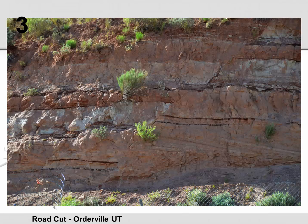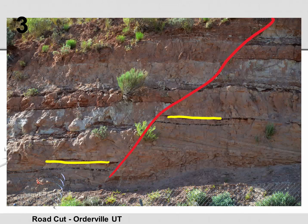Number three is the road cut in Orderville, Utah. Let's identify the fault plane, leaning from left to right across the image. See the double brown lines towards the bottom of the image? These used to match up with each other. Thus, this is a normal fault, formed through tension or divergent motion.